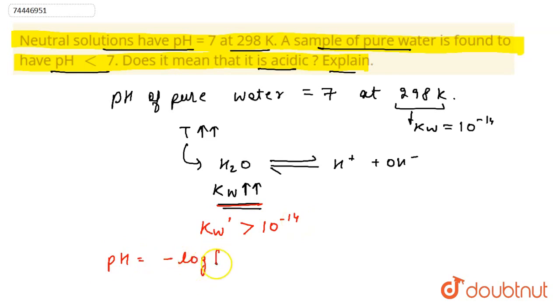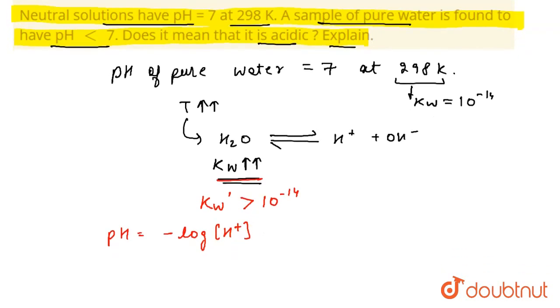And we know pH is equal to minus log H plus concentration. In the case of neutral pH, it is based on H plus concentration. So as H plus concentration is going to increase, this is why pH scale shrinks at higher temperature.